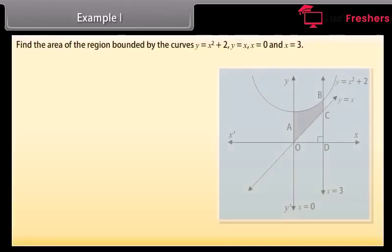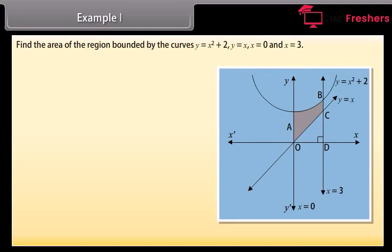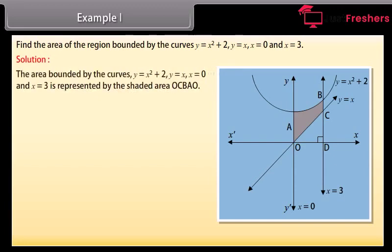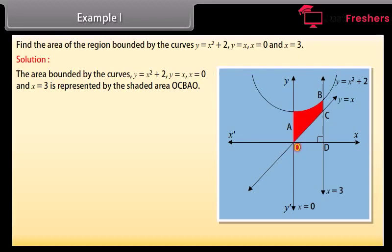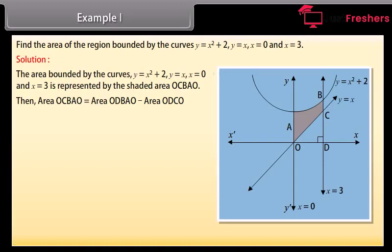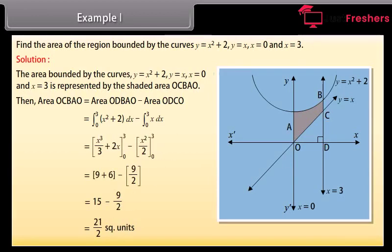Example 4: Find the area of the region bounded by the curves y = x² + 2, y = x, x = 0, and x = 3. Solution: The area bounded by these curves is the shaded area OCBAO. Area of OCBAO = area of ODBAO − area of ODCO = ∫ from 0 to 3 of (x² + 2) dx − ∫ from 0 to 3 of x dx. By solving, we get 21/2 square units.